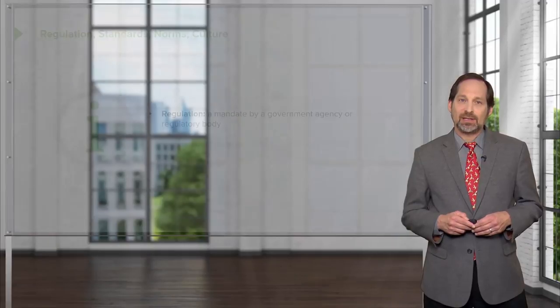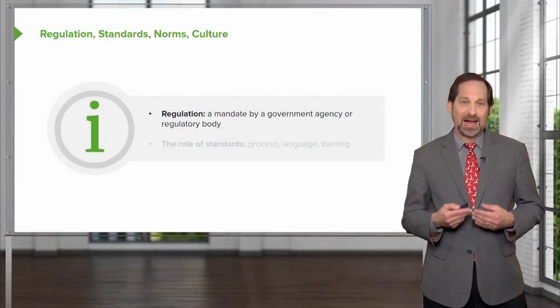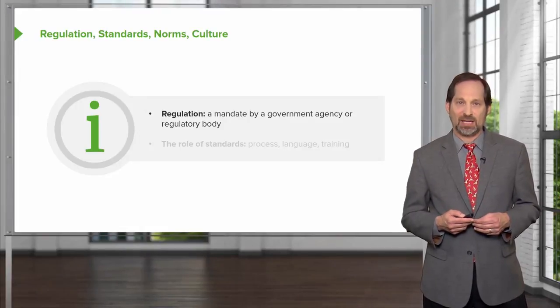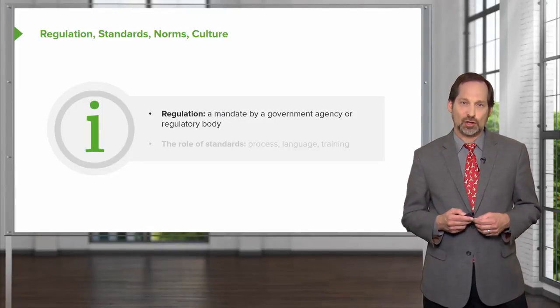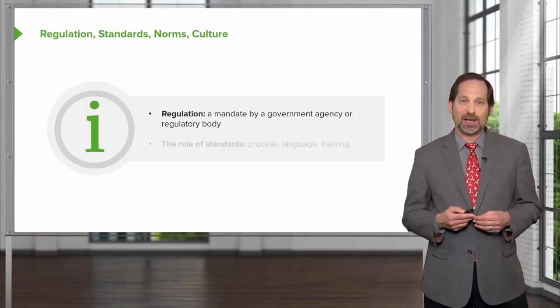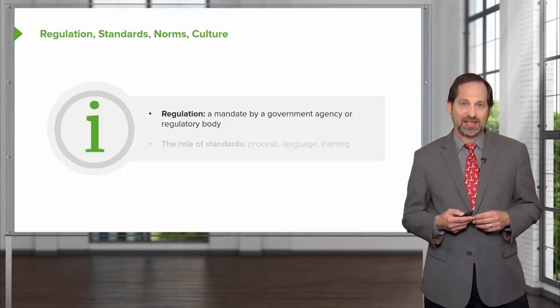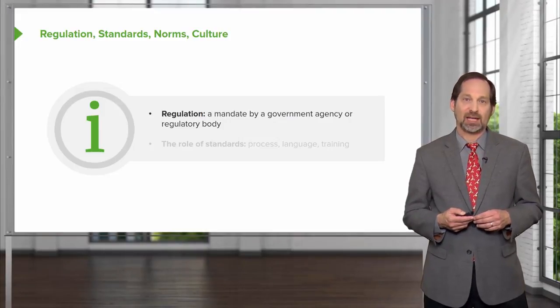Osteopathic medicine is a field, a philosophy, and a technique. When we talk about the regulation of osteopathic medicine — the standards, the norms, the culture — we're talking about a lot of different things. If you're practicing osteopathic medicine it means you're an osteopathic physician or trained in osteopathic manipulative techniques. Typically the government will mandate what it means. There's some kind of regulatory body that licenses people and tells you what you should do if you say you're an osteopathic physician — someone who likely trained in an osteopathic medical school or got additional training in osteopathic manipulative therapy and understands osteopathic principles and practices.